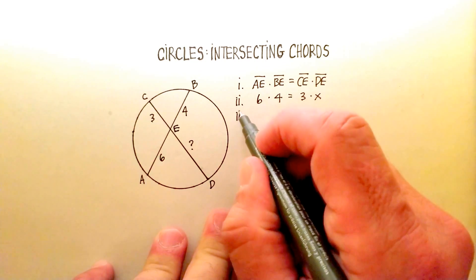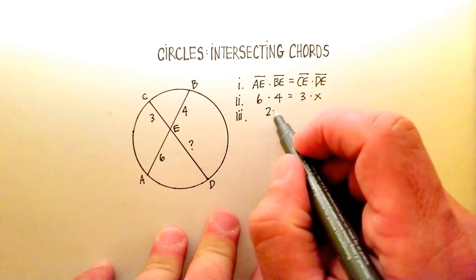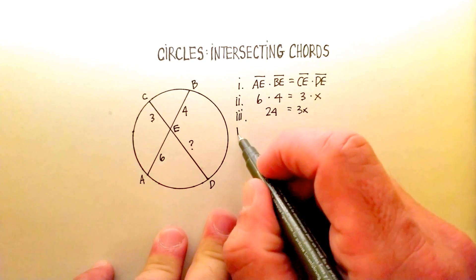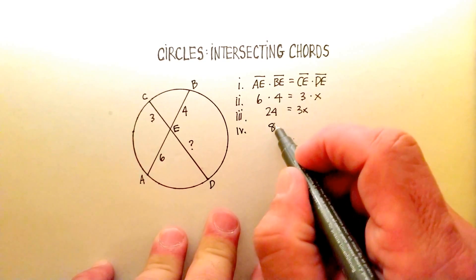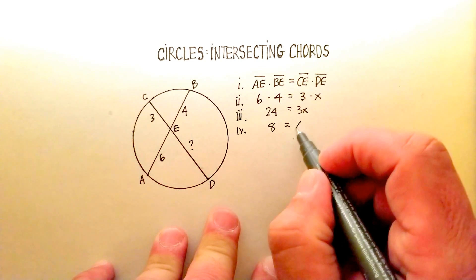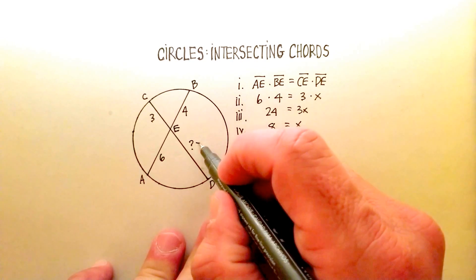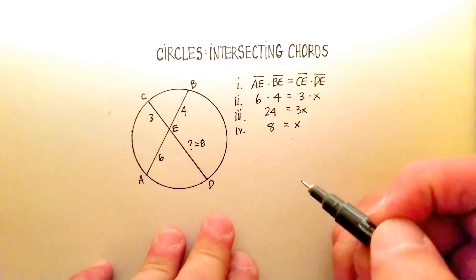Let's go ahead and do our multiplication. We get 24 equals 3X. Divide both sides by 3, and you get 8. So, line segment DE is equal to 8.